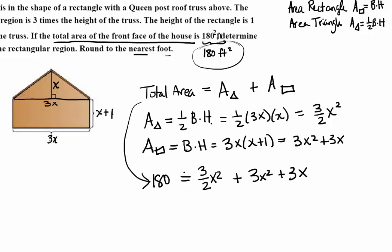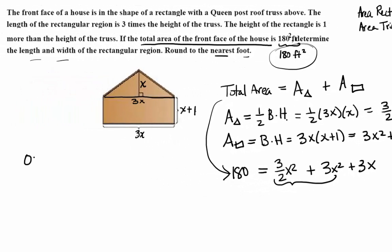So we need standard form. So I'm going to subtract the 180, but I also need to combine these two. So what's 3 halves x squared plus 3x squared going to be? Good. 9 over 2 x squared. So we have 0 equals 9 over 2 x squared plus 3x minus 180.